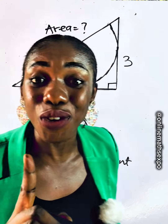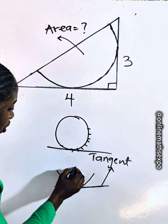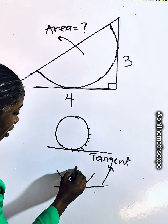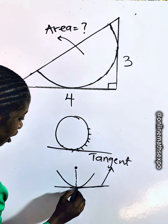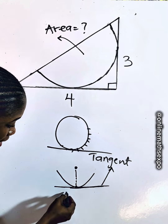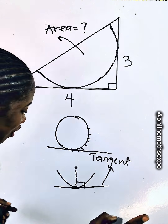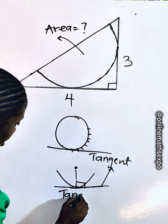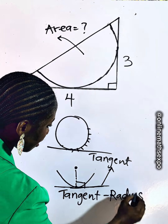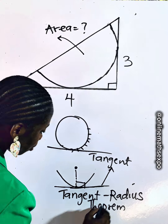This reminds us of a theorem. If this becomes the center of the circle or semicircle, a line from the center touching the arc, meeting the tangent at the point of contact, makes an angle of 90 degrees with the tangent. This is called the tangent and the radius theorem.